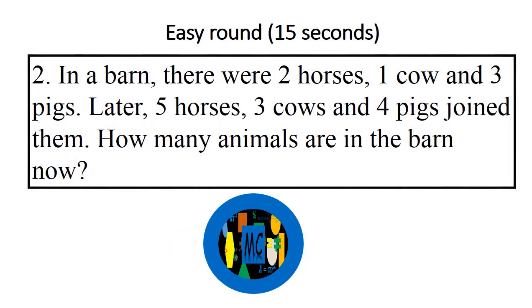Question 2: In a barn, there were two horses, one cow and three pigs. Later, five horses, three cows and four pigs joined them. How many animals are in the barn now? Go!